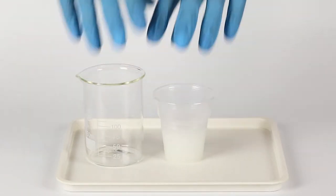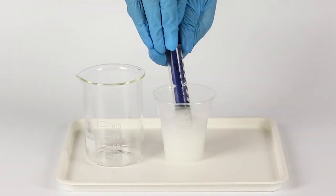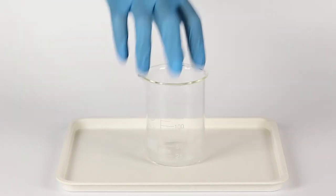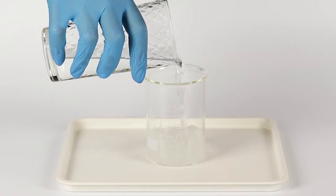Transfer five milliliters of the starch solution to the beaker using a syringe. Fill the beaker with cold water up to the 75 milliliter mark.